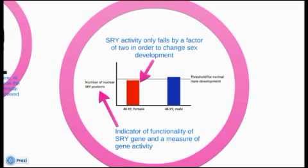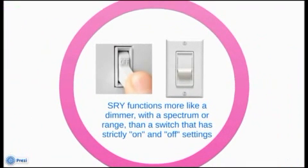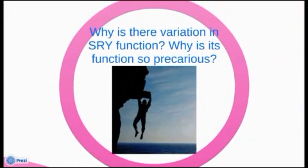Though one would expect that gene activity would have to fall significantly in order to indicate a change in sex development, such activity had to fall only by a factor of two in order for a failure in the development of male characteristics to occur. This contradicts the principle that evolution bears reliability and uniformity, since robust genetic switches should ensure that our genetic programs produce consistent body plans. Research employing mutated SRY genes shared by a father and a sterile XY daughter indicates that male sexual development is less stable than other genetic programs, with SRY activity balancing precariously just above the threshold for producing testes.